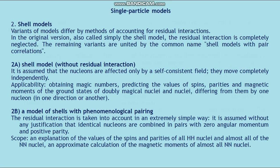Shell model variant (a): shell model without residual interaction. It is assumed that nucleons are affected only by a self-consistent field and move completely independently. Applications include obtaining magic numbers and predicting the values of spins, parities, and magnetic moments of the ground states of doubly magic nuclei and nuclei differing from them by one nucleon.